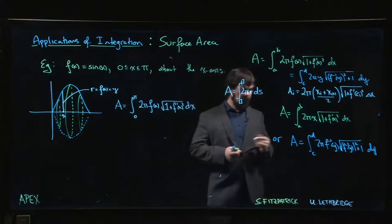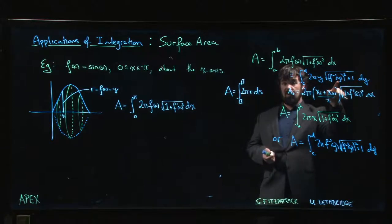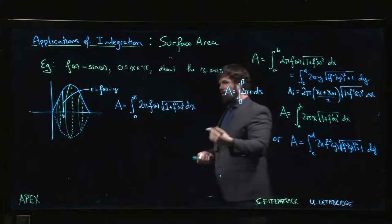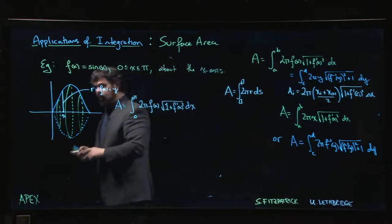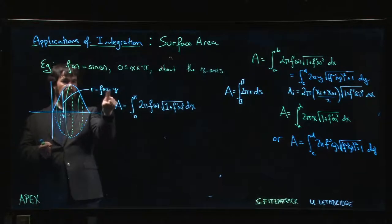but we can do something like 2 pi r times ds. Where ds is this arc length element. It could be expressed either this way or that way, depending on which variable of integration you want to use, and the radius is going to be, if we're revolving about the x-axis, the radius is given by the f of x or y, depending again on which variable you want to use.